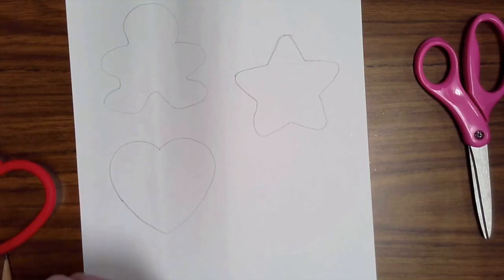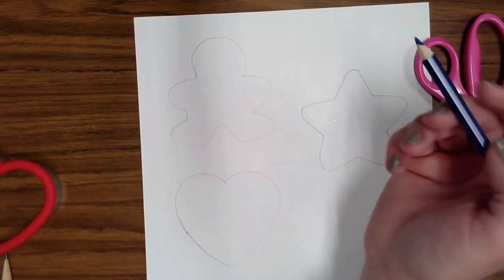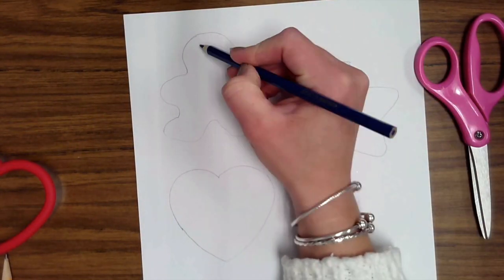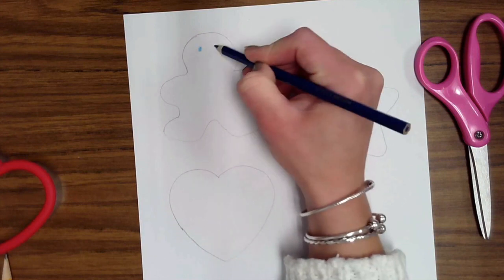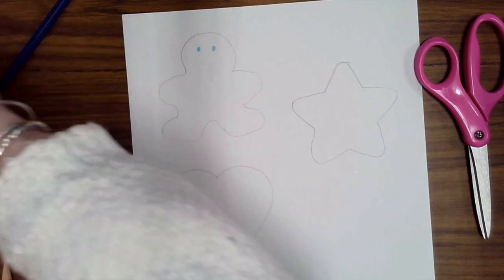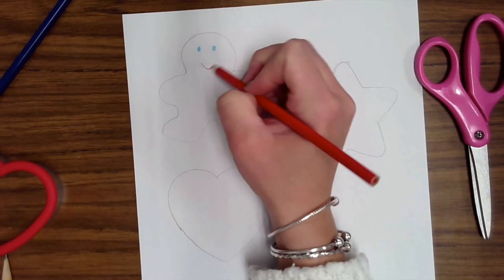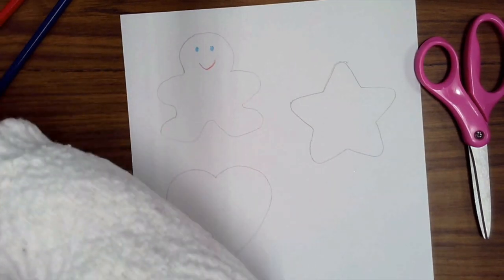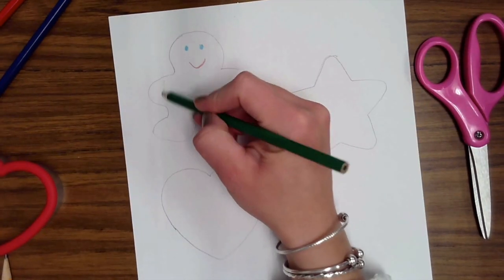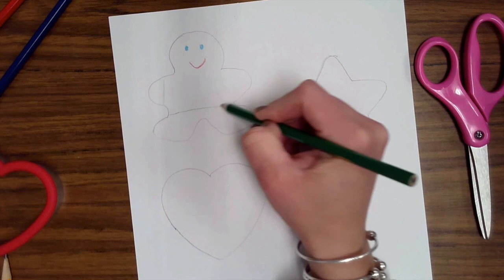Now take your colored pencils and you can design. So if we have little people, we can give them some eyes, and a mouth, and a shirt.